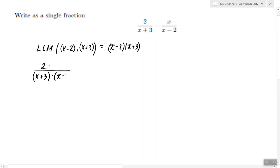So the first rational expression has to be multiplied by x minus 2 in the numerator and the denominator, and the second expression has to be multiplied by x plus 3 in the numerator and the denominator.